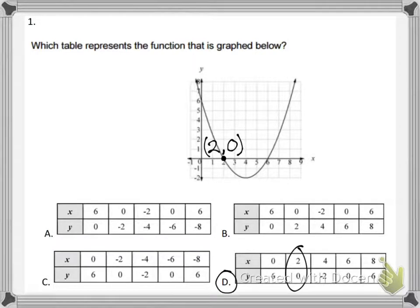If you look at choice D, when x is 2, y is 0. And if you look around at the other tables, there isn't any other table that has that same combination of 2 comma 0, so that eliminates A, B, and C as answer choices.